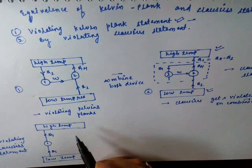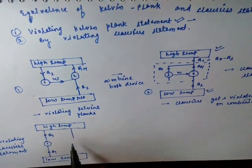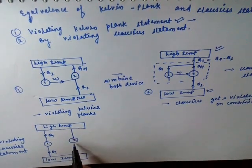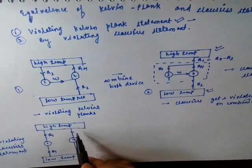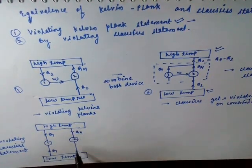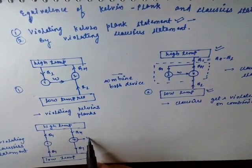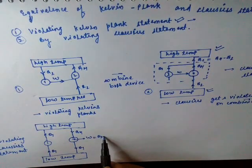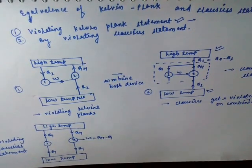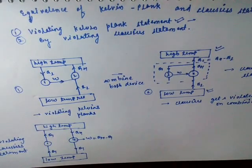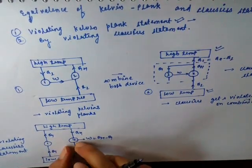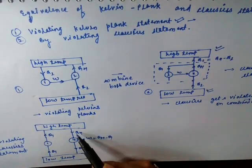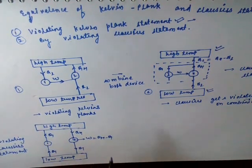Now to prove this, let us assume another device — Device 2 — that takes heat from the high temperature reservoir and rejects it to the low temperature reservoir, and does work W equal to Qh minus Q1. In this case, we are violating the Clausius statement, but in Device 2 the Kelvin-Planck statement is still not violated — it is valid here.